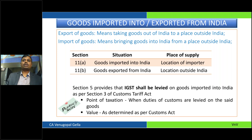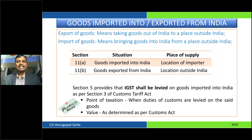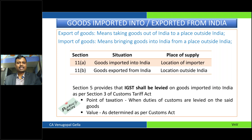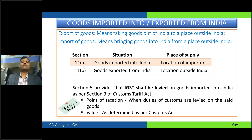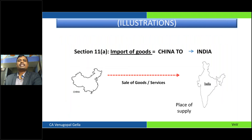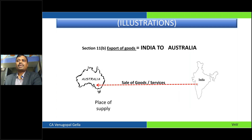Goods exported from India — location is outside India — so wherever the goods are exported, the place of supply is outside India. Section 5 provides that IGST shall be levied on goods imported into India as per Section 3 of the Customs Tariff Act. Technically, import transactions have the levy happening under Section 3 of the Customs Tariff Act — which is why the input tax credit definition specifically includes this IGST paid on imports. Import of goods example: from China goods moving to India — place of supply is in India, import transaction. Export: from India goods moving to Australia — place of supply is Australia.